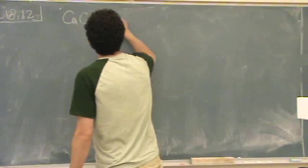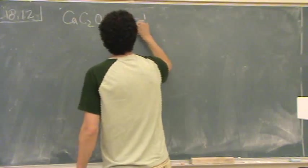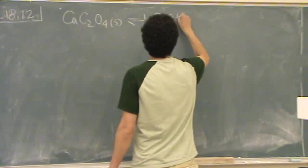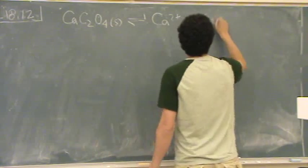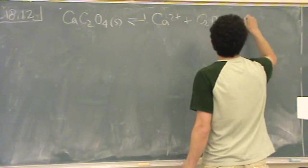So calcium oxalate, that's what we have saturated. We can write our reaction: calcium 2 plus, C2O4 2 minus, these are both aqueous.